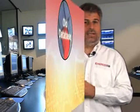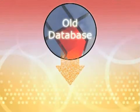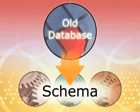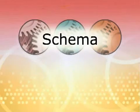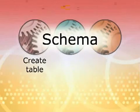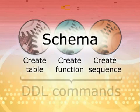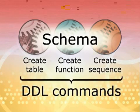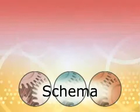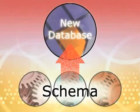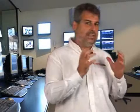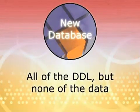And how does it work? Basically, pg_migrator takes the old database and dumps out the schema of the old database. The schema contains things like create table, create function, and create sequence — all the things we call DDL or data definition language commands. And those DDL commands are loaded into the new database. So all of a sudden, we have a new database that has all of the objects from your old database, but none of the data.